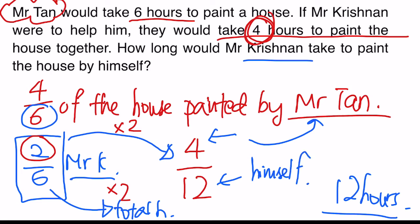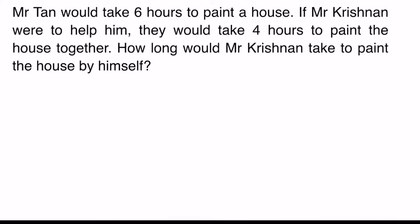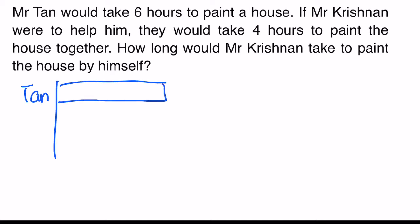This is one of the many methods to solve the question. Now I will use the model method to show you. So I have Mr. Tan here. He painted the house by himself using six hours, so the entire chunk here represents the house. He took six hours, so I'm going to break it down into six parts — one, two, three, four, five, six — six units, and every one unit is one hour.